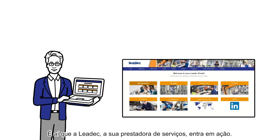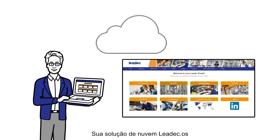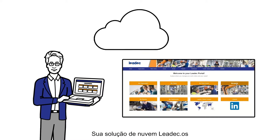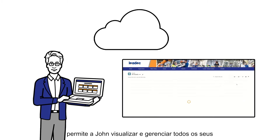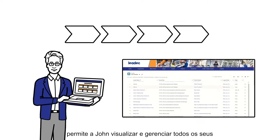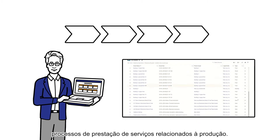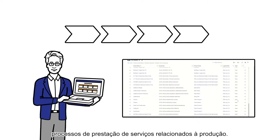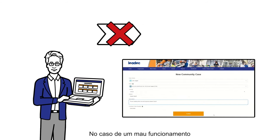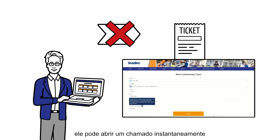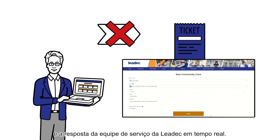That's where his service provider Lidec comes in. Its cloud solution, Lidec OS, allows John to view and manage all his production-related service processes. In the event of a malfunction, he can submit tickets instantly and track their status and the Lidec service team's response in real time.